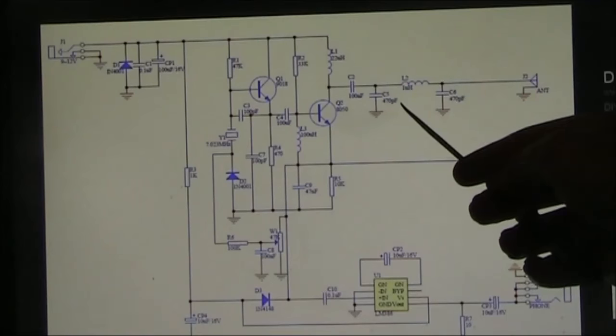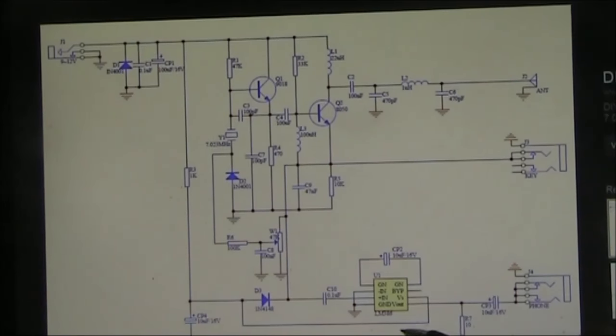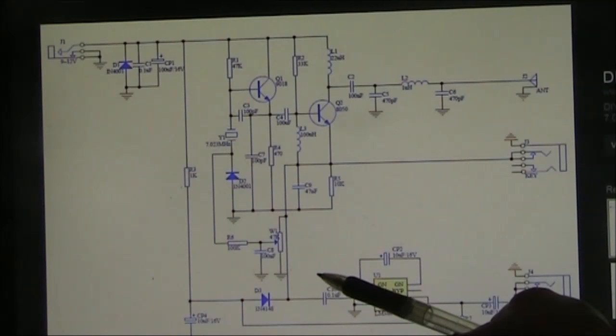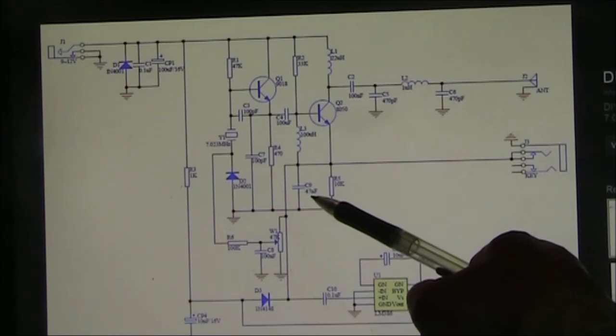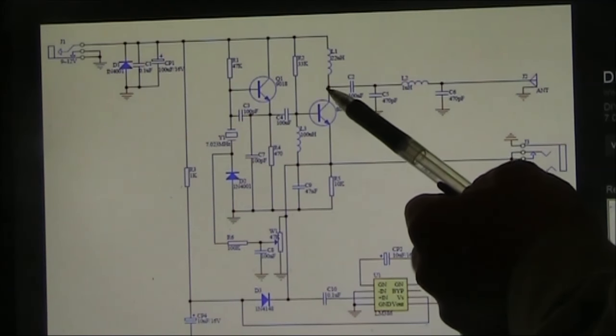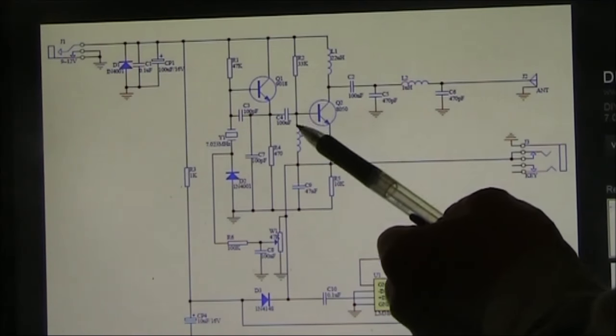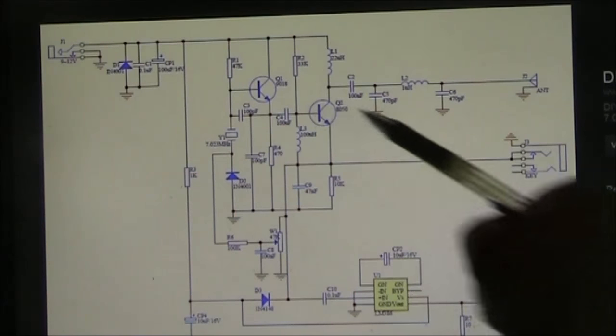So again, check your component values. Another important technique is to trace voltages. Although I didn't measure mine, I'd expect the emitters to be a couple of volts above ground, and for the collectors to be near the supply rail. The base a little bit above the emitter in voltage.